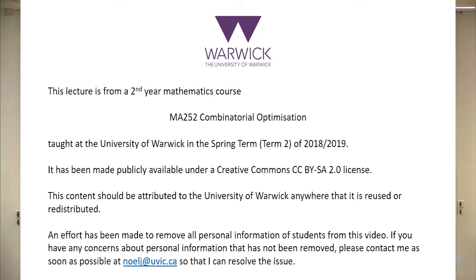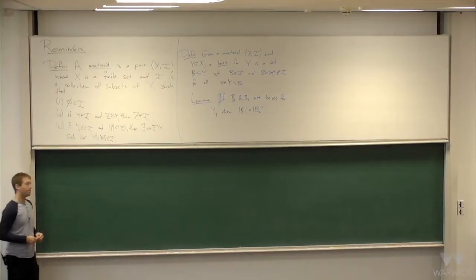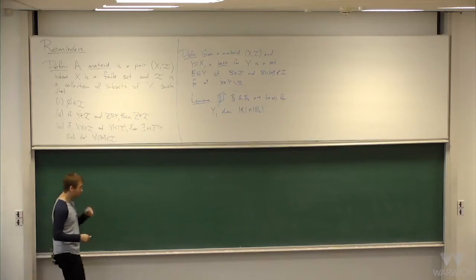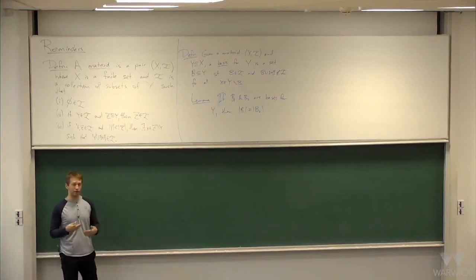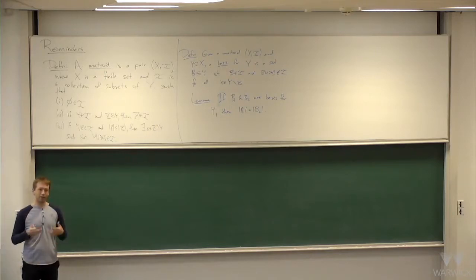So you might remember the last two lectures, we've been talking about matroids. Two lectures ago, we introduced matroids and gave some examples. And then last lecture, we got into some motivation for matroids. In particular, we proved that matroids are basically the structures where the greedy algorithm always gives the optimum.